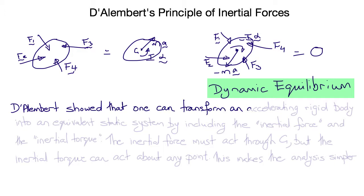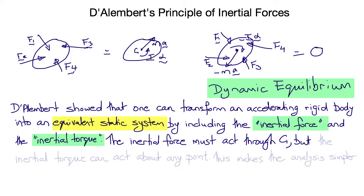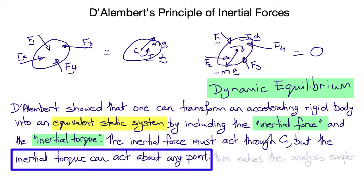D'Alembert showed that one can transform an accelerating rigid body into an equivalent static system by including the inertial force and the inertial torque. The inertial force must act through the center of mass G, but D'Alembert found that the inertial torque can act about any point in the body with the exact same result. This makes the analysis simpler, and so we can now use the free body diagram approach that we use for statics for problems in dynamics as well.